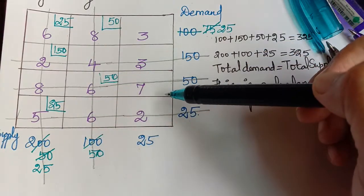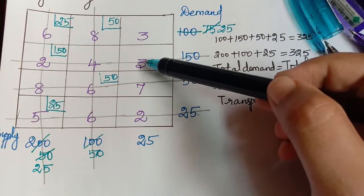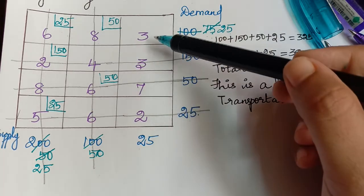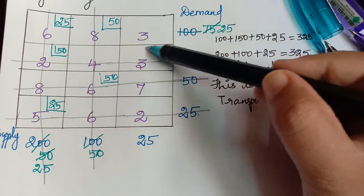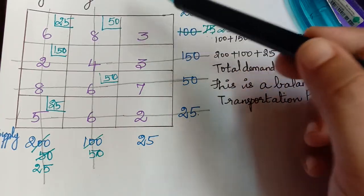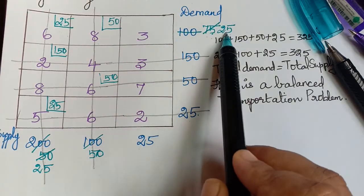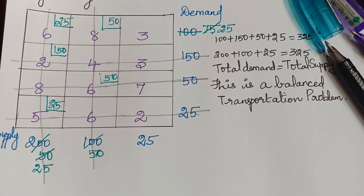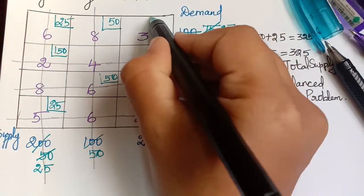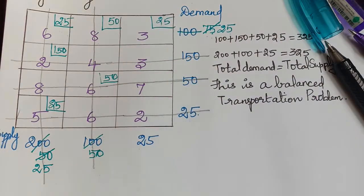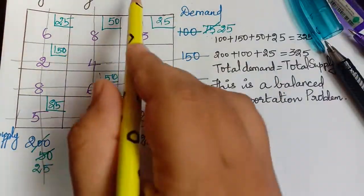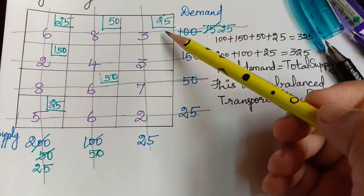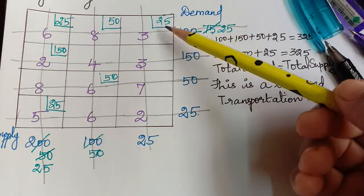Moving to the third column, three cells have already been struck off, leaving only one cell. We make an allocation for this cell. The demand is 25 and the supply is also 25, so it is a feasible solution. We allocate 25 and strike off the corresponding row as well as the column. All allocations are now complete.